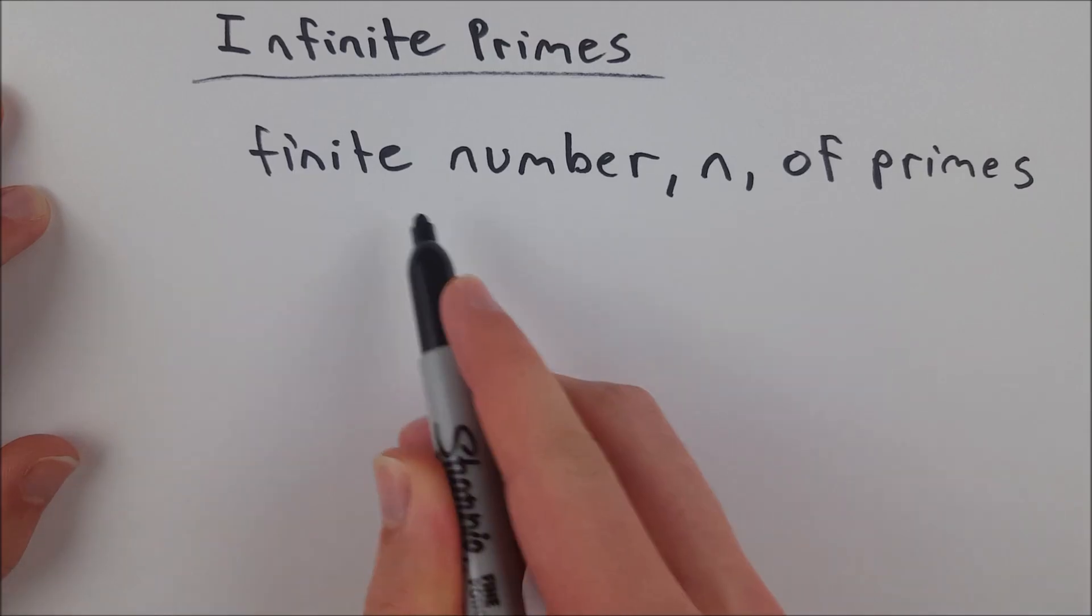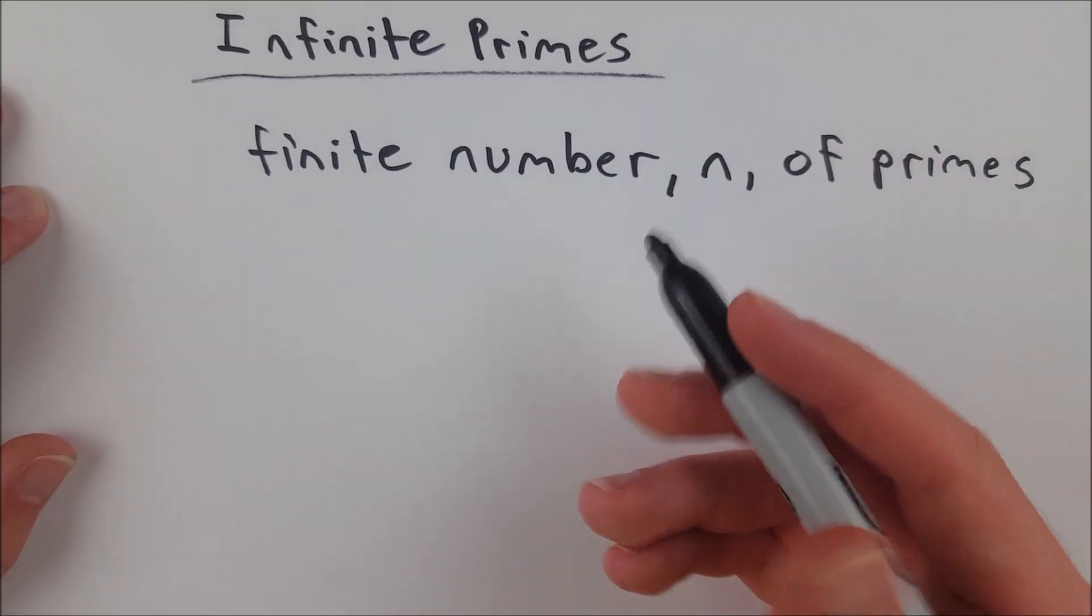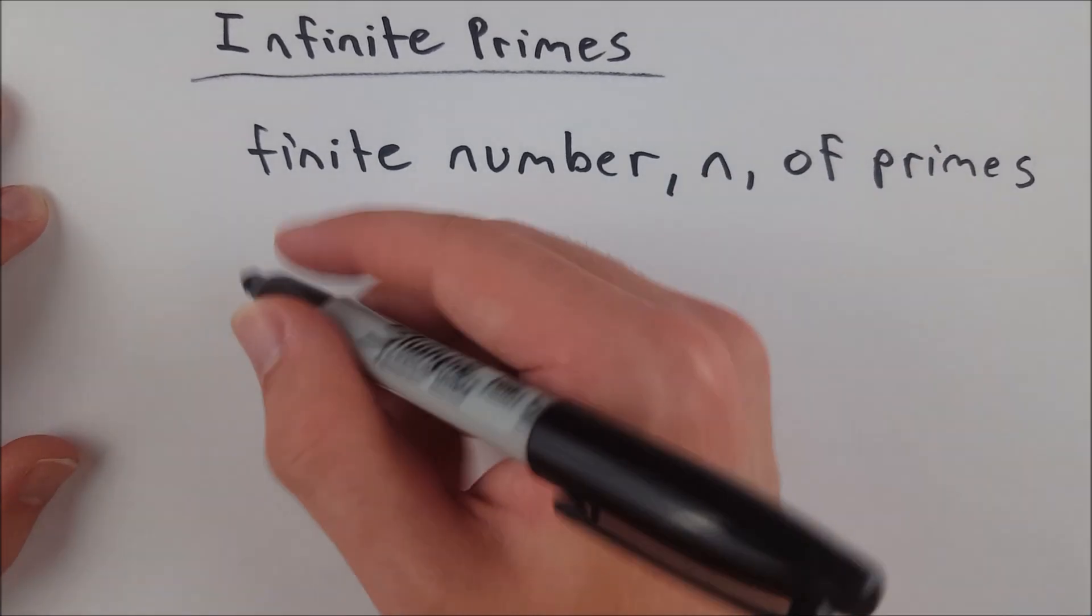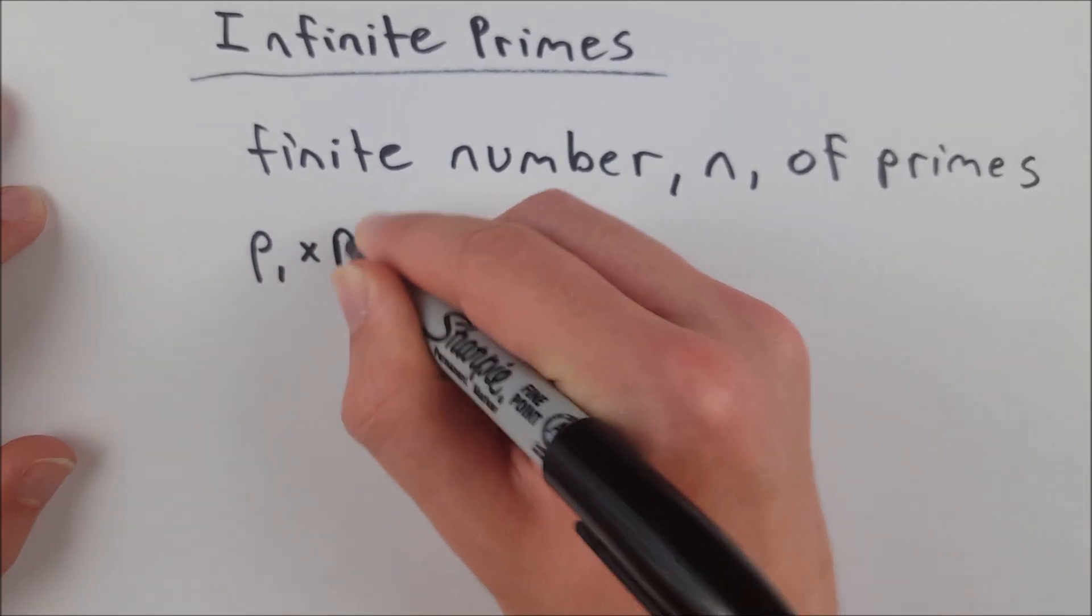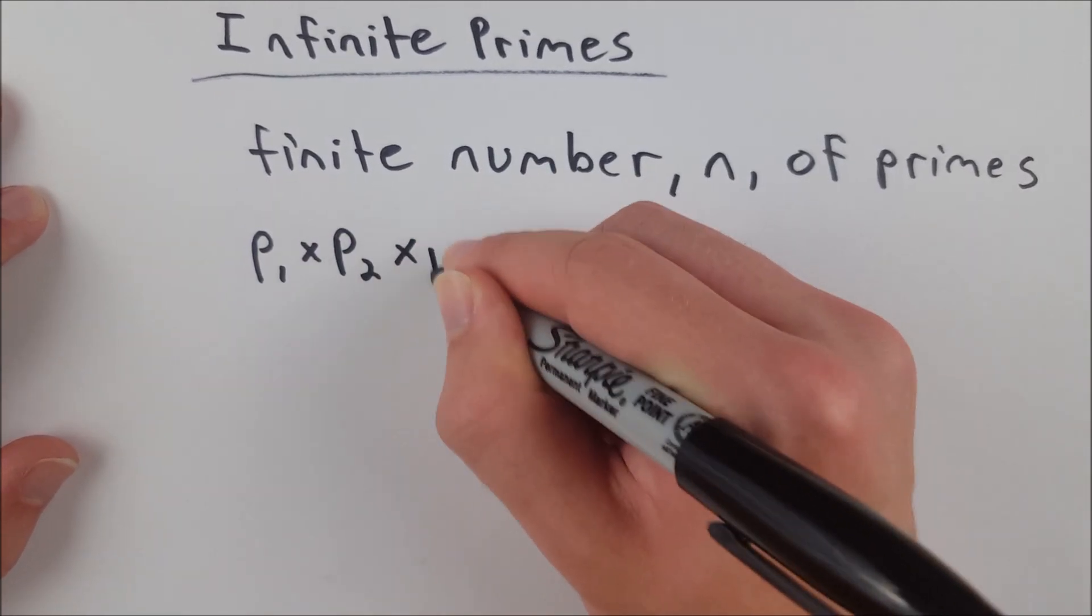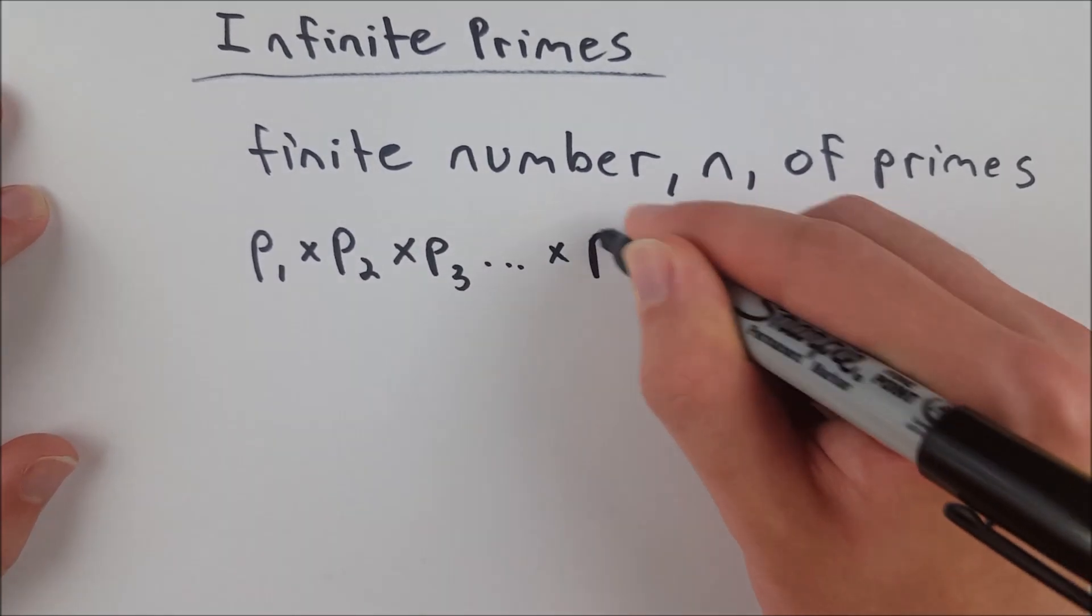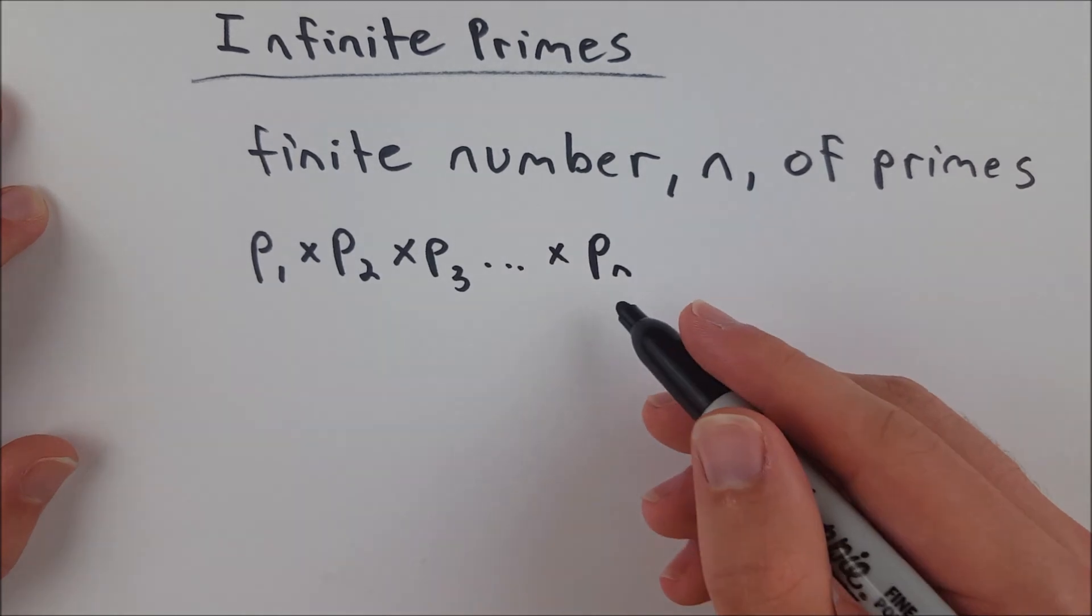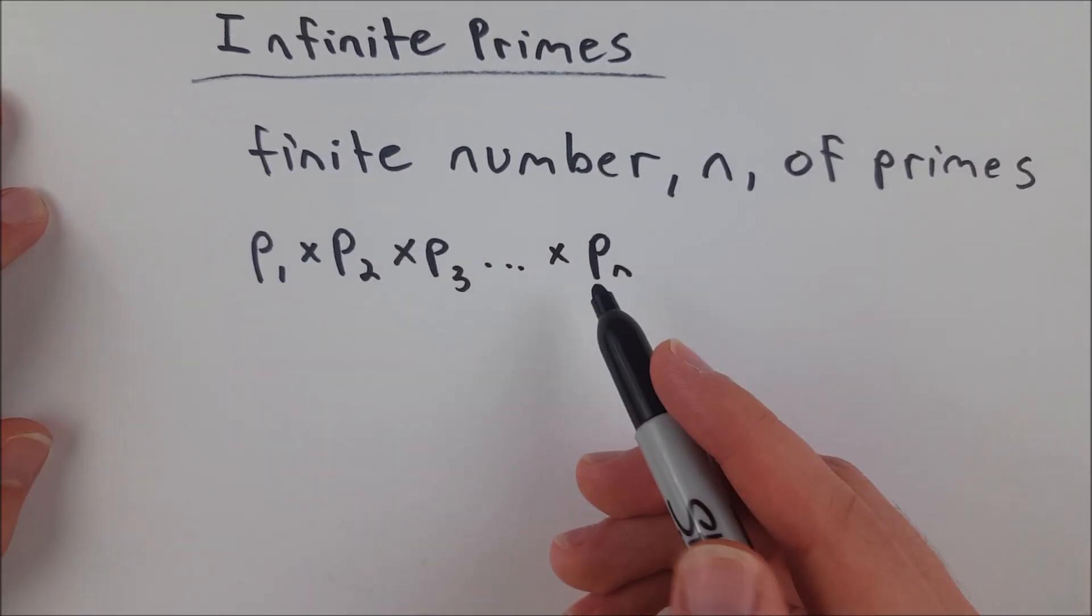So we're assuming there's a finite number, we'll say n of primes. That means there are n primes, some finite number. So let's take the product of all those primes, p sub 1 multiplied by p sub 2 multiplied by p sub 3, all the way up to multiplying by p sub n, the nth prime, which based on our assumption that there's n primes, is our last prime.